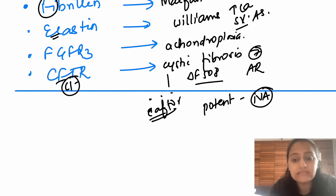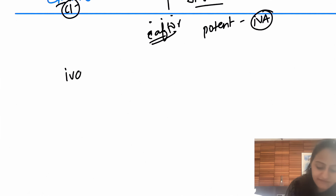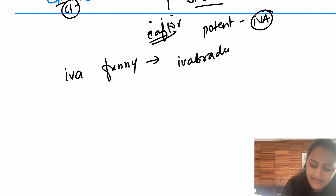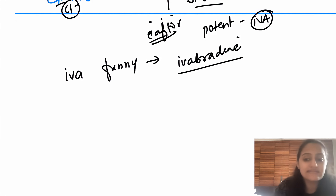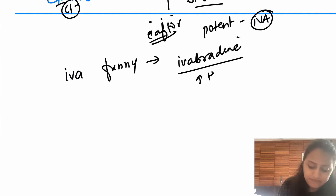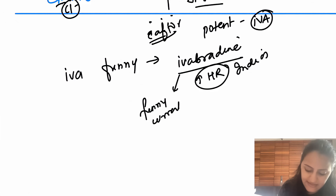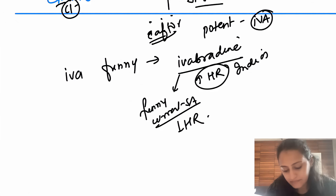Ivacaftor is a potentiator in cystic fibrosis treatment. Similarly, ivabradine — remember 'Iva is funny' — acts on the funny current (I_f) in the SA node to decrease heart rate. Ivabradine is used especially when heart rate is greater than 70 even after using a beta blocker in a patient of heart failure.